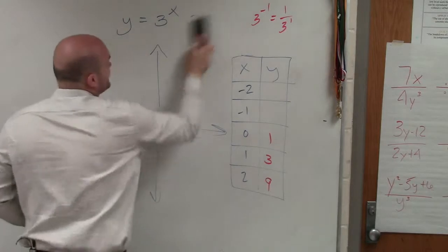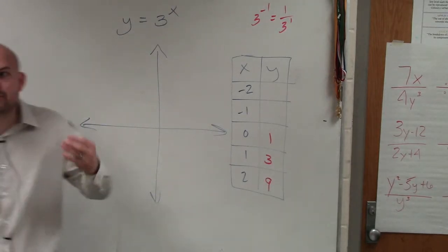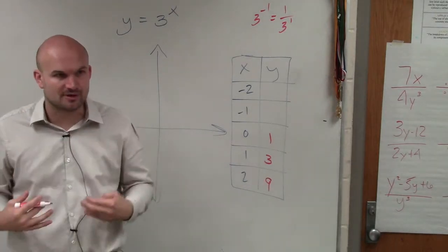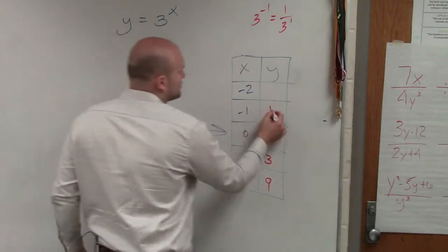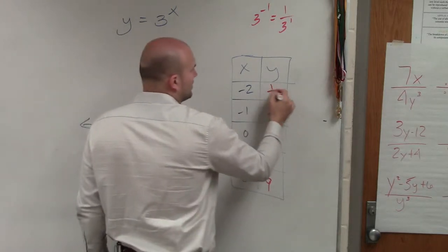That is what I want you guys to remember from this, that when you have negative exponents, you have to rewrite them as the reciprocal. So 1 over 3 to the first power is 1 third. And then negative 2 would be 1 ninth.